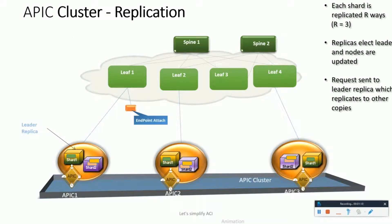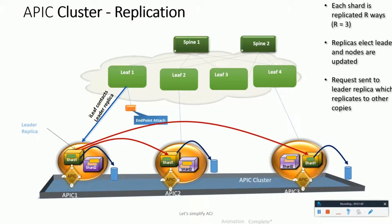Now let's understand how the replication process works among the APIC controller cluster — both when everything is working fine and if an APIC fails. Let's say a new end host attaches to the ACI fabric. Currently APIC 1 is the leader of the cluster, and the leaf contacts APIC 1 to provide a replica for this connection. This new information is sharded and shared with the other controllers to be stored in their local data stores as well.